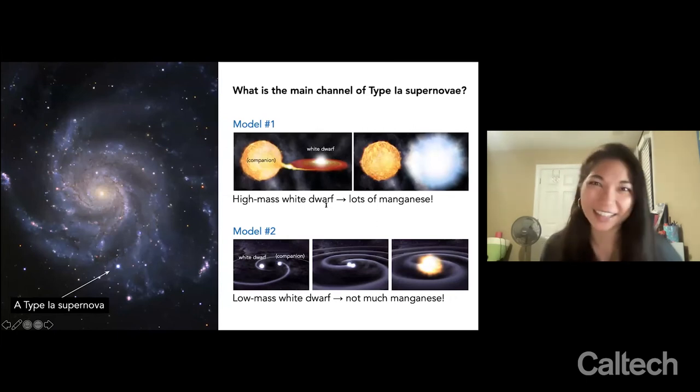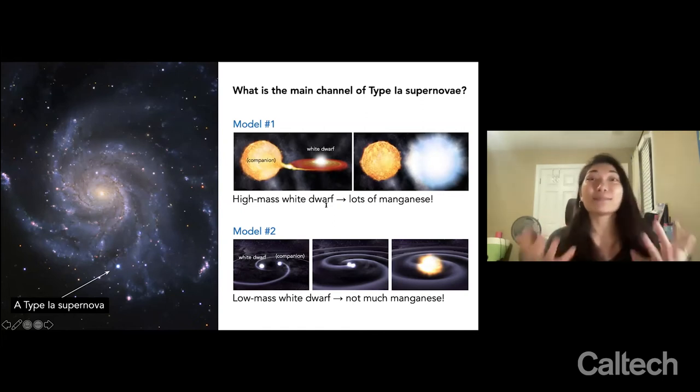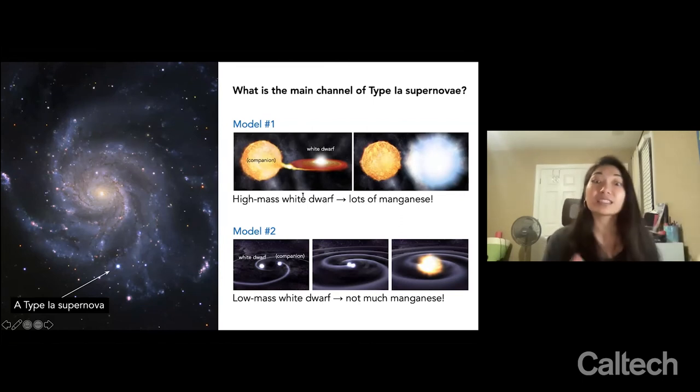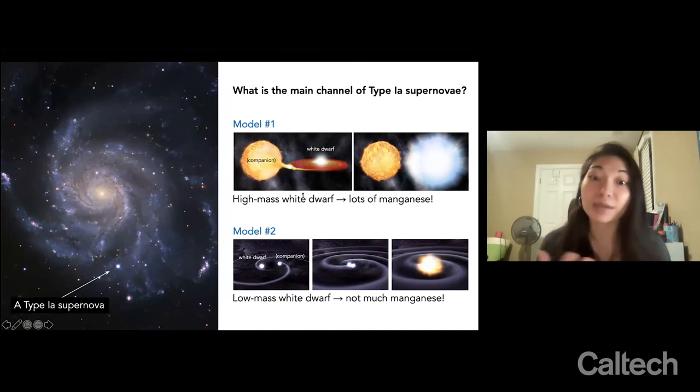Enter your friendly neighborhood galactic archaeologist. Type Ia supernovae produced lots of heavy elements like iron and nickel and manganese. And I'm personally a fan of manganese because the amount of manganese produced in a supernova depends on the mass of the white dwarf that exploded. So my thesis aims to narrow down the list of possible models for Type Ia supernovae by measuring manganese and other elements in nearby galaxies.